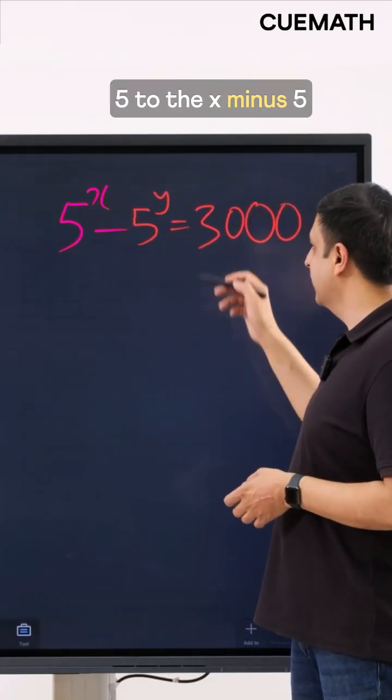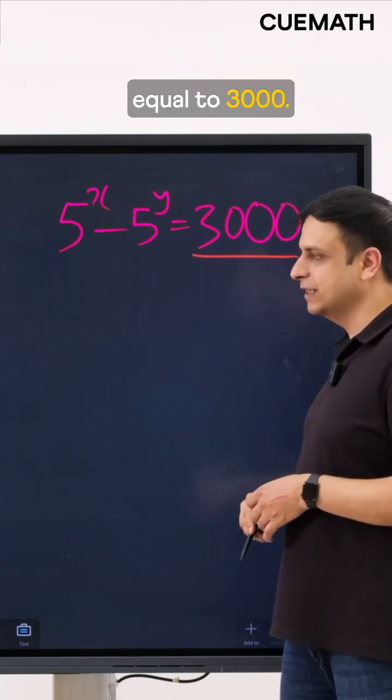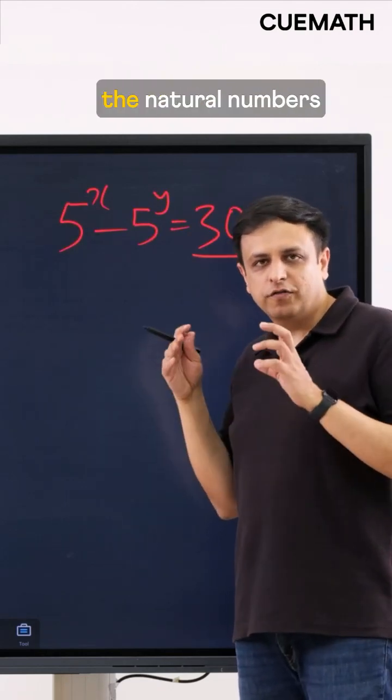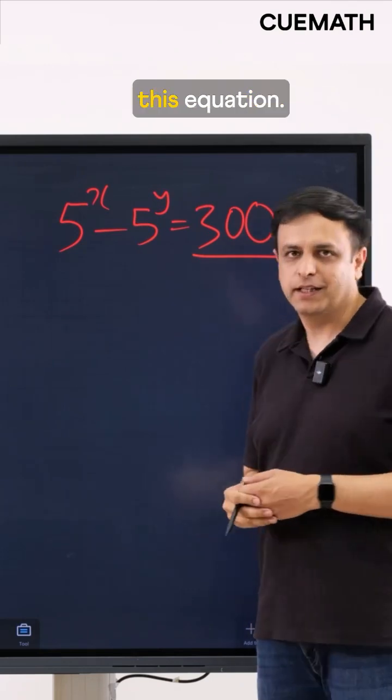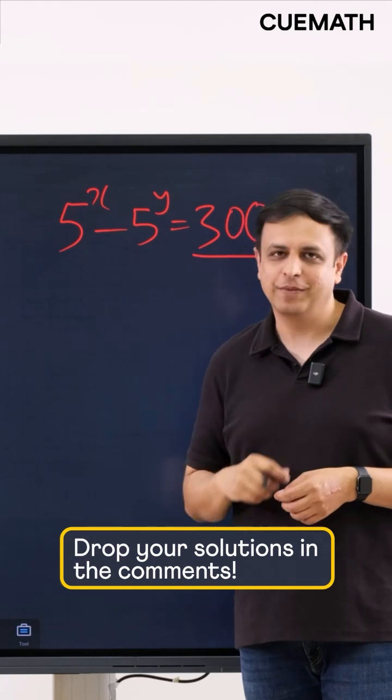Now here's a challenge for you. 5 to the x minus 5 to the y is equal to 3,000 and you have to find the values of the natural numbers x and y that satisfy this equation. If you can solve this problem, let me know your solution in the comments.